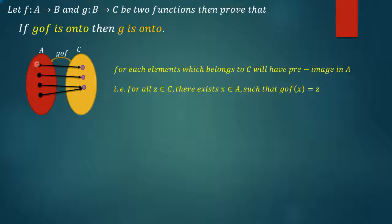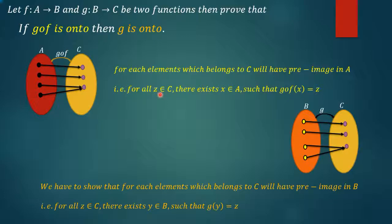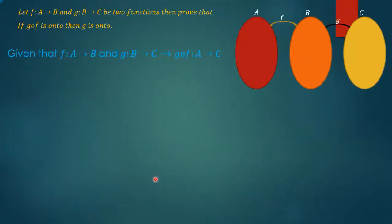In other words, g(f(x)) = z, where x belongs to set A and z belongs to set C. We have to prove that g is an onto function, which means we have to show that g(y) = z, where z belongs to set C and y belongs to set B. It is already given that f maps A to B and g maps B to C, which implies g∘f maps from A to C.